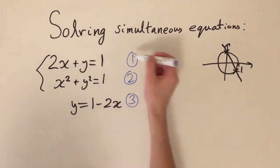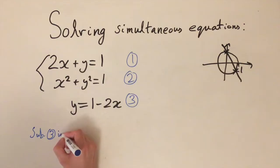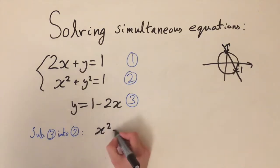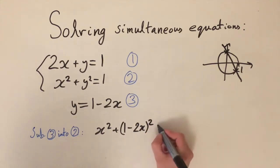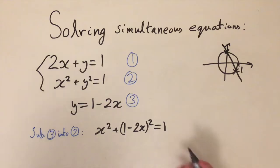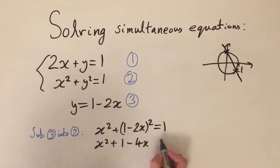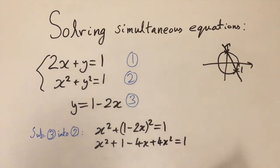Now we want to substitute equation three into equation two — I'll write 'substitute 3 into 2' to keep track. This gives us x squared plus y squared, but now y equals 1 minus 2x, so we get x squared plus (1 minus 2x) squared equals 1. Expanding the bracket: 1 minus 4x, and then minus 2x times itself gives 4x squared, still equal to 1.